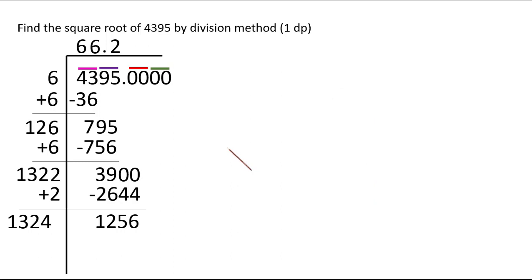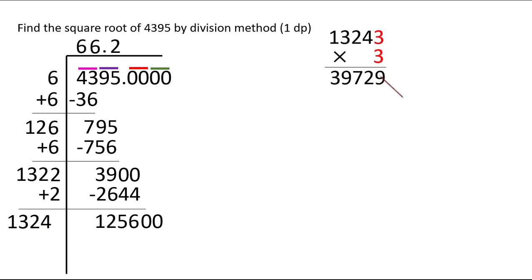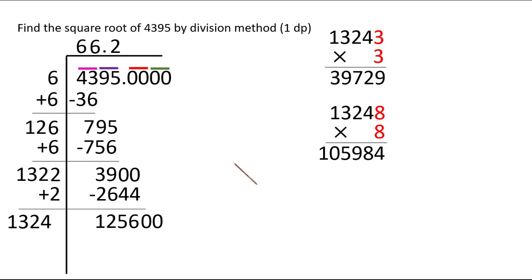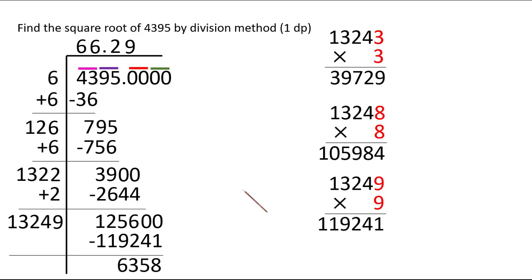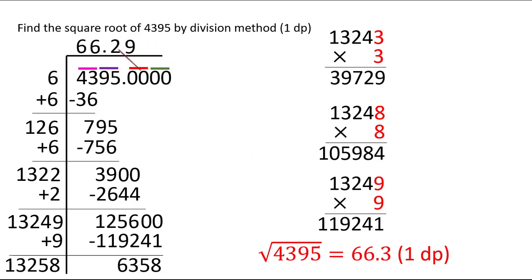Bring down the final two zeros. We need a digit after 1324 such that multiplying gives 125600 or less. Trying 9: 13249×9=119241; this is still less than 125600, so we go with 9 since we cannot write 10. Subtracting gives 6358, and adding 9 gives 13258. Since we want only 1 decimal place, we stop here and round. The answer to our question is 66.3.